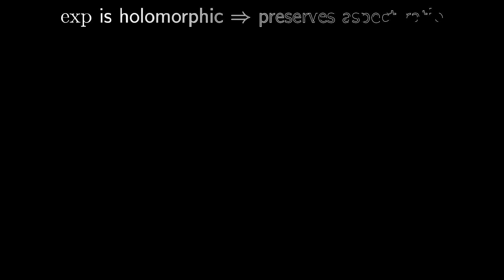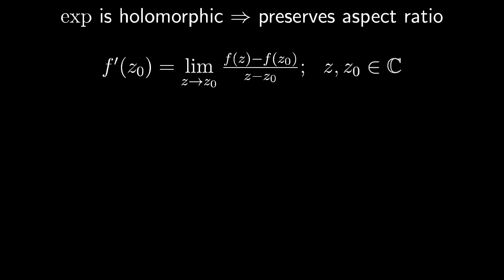The exponential function preserving the aspect ratio wasn't just a lucky coincidence. This is actually an implication of the exponential function being holomorphic. Being holomorphic means that for all complex numbers z0 the complex derivative of the function exists. This may not sound like a very strong condition since a function being differentiable on the reals is very common.